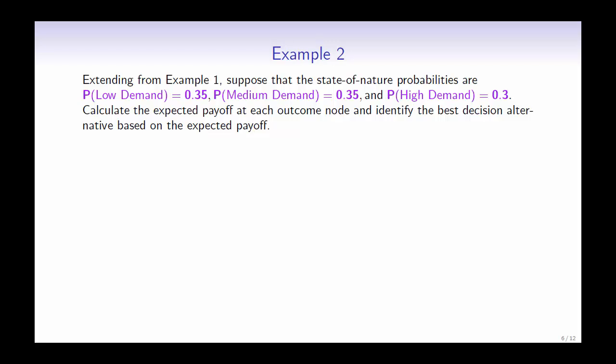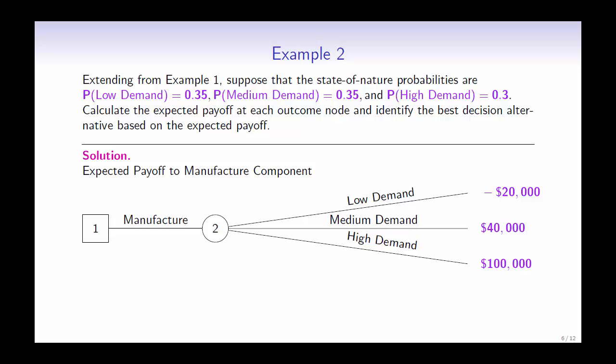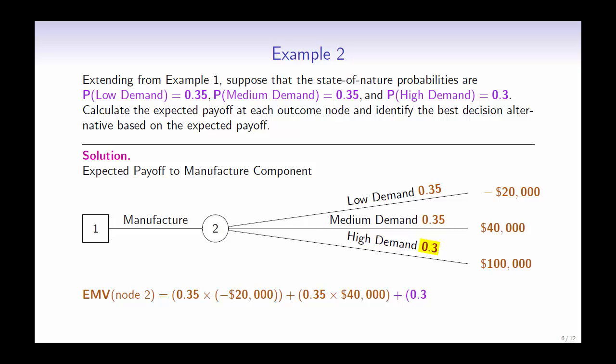First, let's calculate the expected payoff if the company were to manufacture the component. The expected payoff is 35% times negative $20,000 for a low demand, plus 35% times $40,000 for a medium demand, plus 30% times $100,000 for a high demand. This equals to an expected payoff of $37,000.